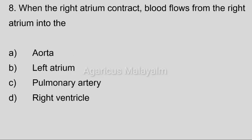Eighth question: When the right atrium contracts, blood flows from the right atrium to the? Answer options: Option A, aorta. Option B, left atrium. Option C, pulmonary artery. Option D, right ventricle. Correct answer: Option D, right ventricle.